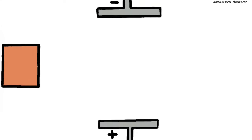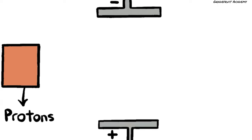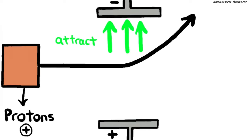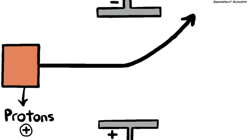Let's first take a look at the direction that protons will be deflected when passed through the electric field. Since protons are positively charged, they will be attracted to the negatively charged plate and repelled by the positively charged plate. Hence, the beam of protons will be deflected towards the negatively charged plate and away from the positively charged plate.